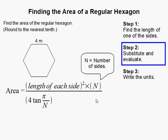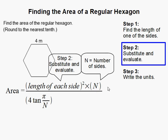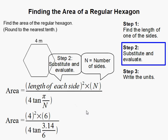So here's the equation. Remember, n in this equation means the number of sides, and this is the length of each side. I went ahead and substituted: 4 for the length, and the number of sides is 6.